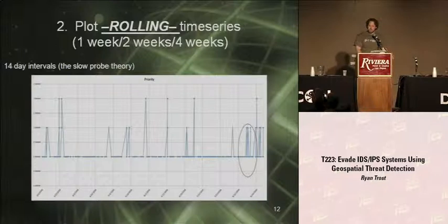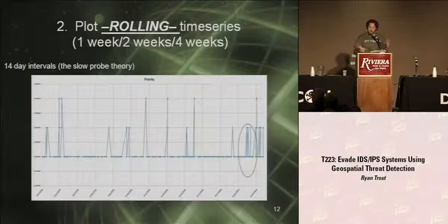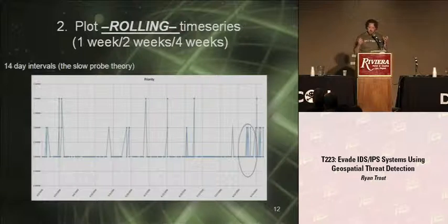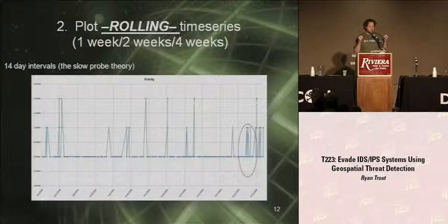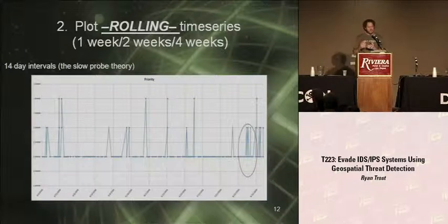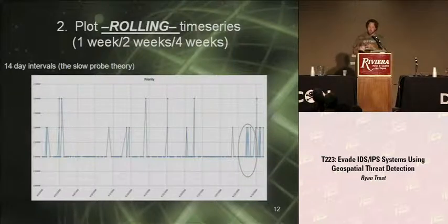The time series — the timestamp is very important. When you're doing data mining with IDS alerts, there are just so many false positives and so many alerts that you can't analyze the entire data set; you've got to break it into smaller chunks. You want to plot rolling time series of one week, two week, four week. This is targeting the professional hacker — not the high school student who got home from school doing an aggressive NMAP scan. You want to target the low-and-slow to really hit the hackers.